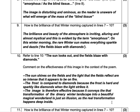Refer to line ten: 'The sun looks out and the field blaze with diamonds.' Three marks — comment on the effectiveness of the image in the context of the poem. 'Effective' means: does it fit together? What is being said in the image — does it fit in with the idea? So 'the fields blaze with diamonds' has a deeper, figurative meaning. Does the literal fit in with the figurative? Is it effective? Can the light shining on the field look like sparkly diamonds? Do those two images fit together? You need to explain.